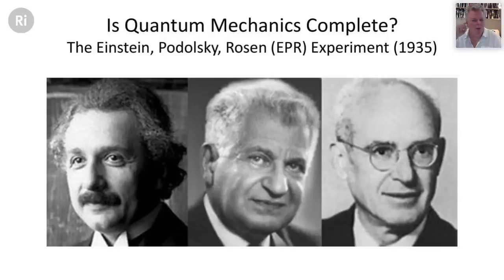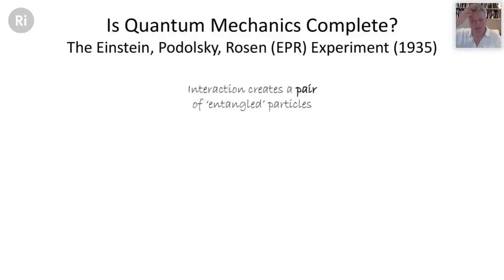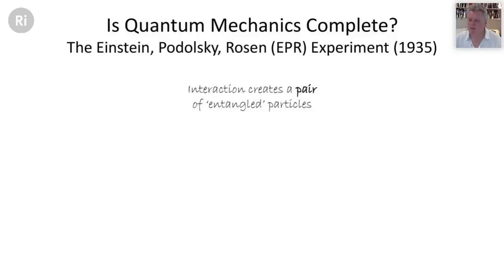In 1935, Einstein, Podolsky, and Rosen devised a thought experiment — the EPR experiment — as a direct challenge to quantum mechanics. They wanted to know: is quantum mechanics complete? The challenge involves the creation of a pair of entangled particles — two electrons or two photons that have interacted in the past or been created together through an atomic process — so that their properties are subtly connected quantum mechanically.